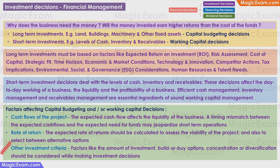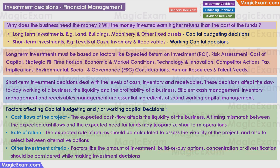Other investment criteria include factors like the amount of investment, is it worth the risk, build or buy options — do you need to start a new business or should you just buy an existing business — and concentration or diversification risks should also be considered while making investment decisions. In short, investment decisions will decide why do you need the money and is the project or the business worth investing in.